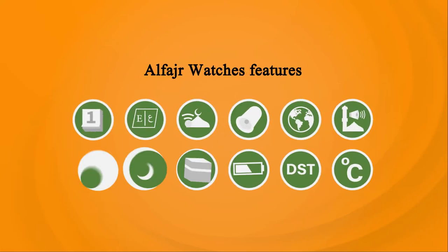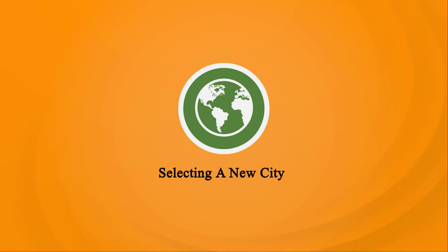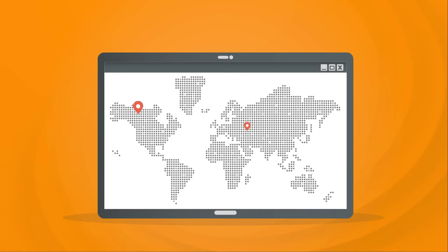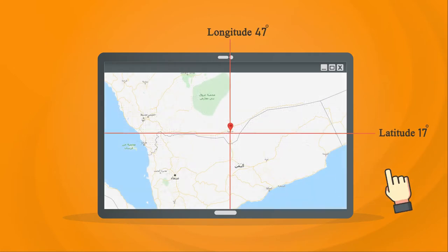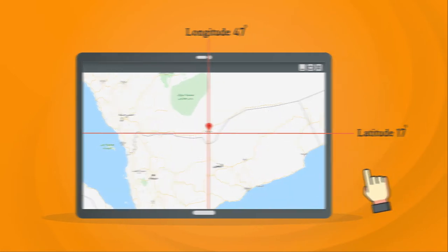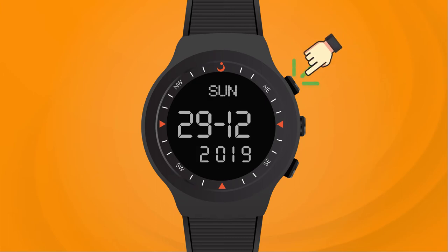Al-Fajr Watch's Features: Selecting a New City. If you don't find your city in the watch, you can add it using latitude and longitude information. For example, to add Sharora City in Saudi Arabia, follow these steps.